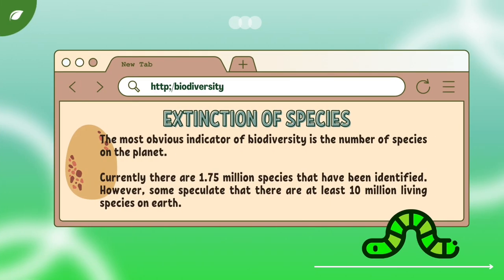Extinction of Species: the extinction rate is of great concern because once a species is extinct, there is no chance of ever getting that species back on the planet. There are three main problems that cause species extinction. First, habitat loss. Second, degradation. And lastly, fragmentation. Habitat loss is described as a complete destruction of a habitat — an example would be the logging of a forest. All three of these problems are directly related to human influence.